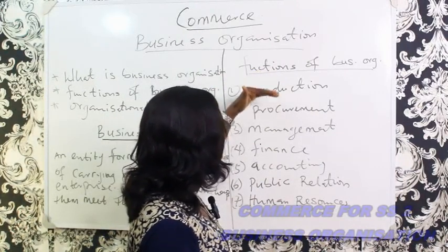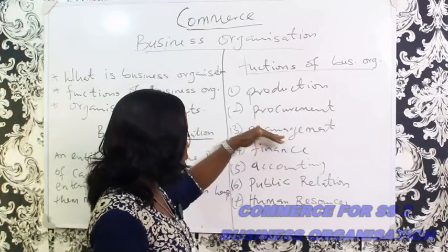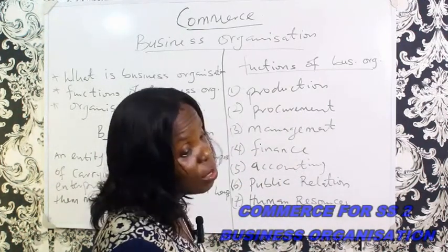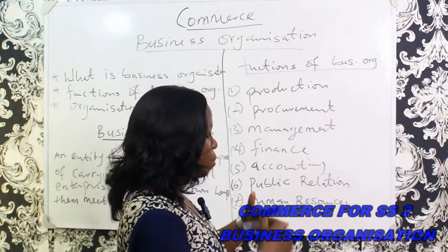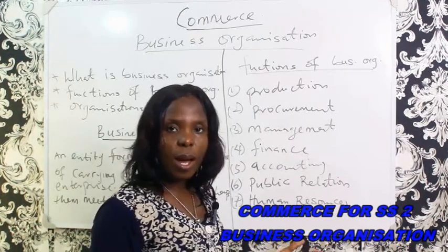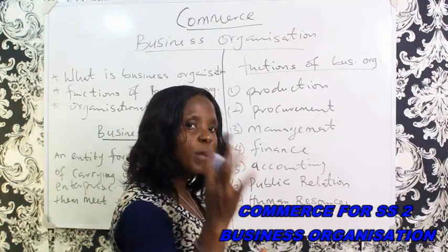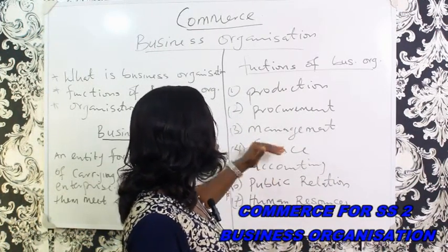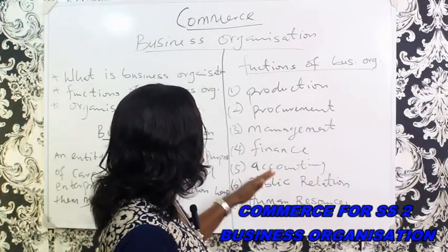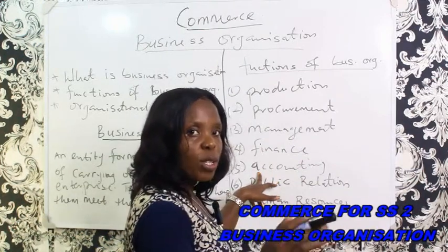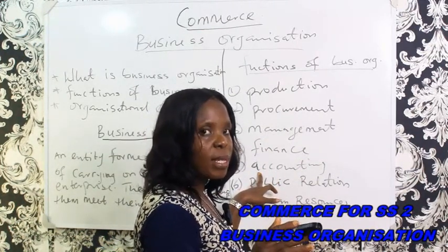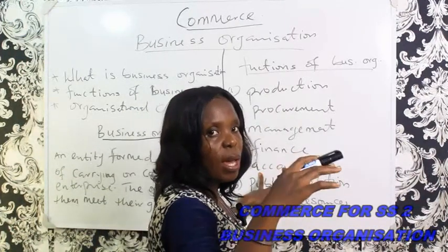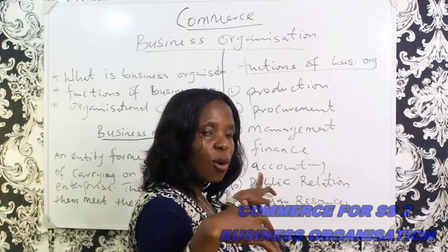After production and procurement have been carried out and managerial and finance processes are in place, accounting is necessary. Accounting has to do with the recording of business transactions or business activities — it can be daily or as the case may be — and different books of account are required to keep track of how all these processes are being carried out. Lack of accounting will lead to collapse of the entire business, so accounting is required to monitor what is happening, track financial processes, see how procurement is being done, what is being produced, and how sales are carried out.